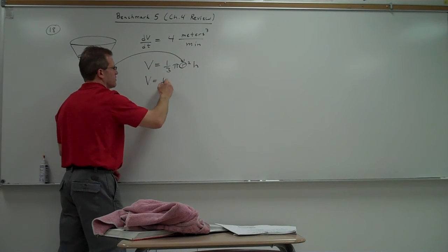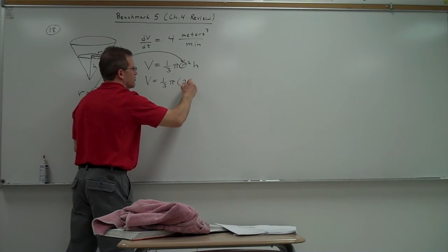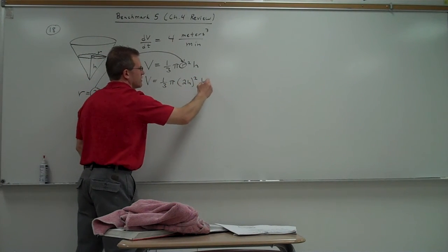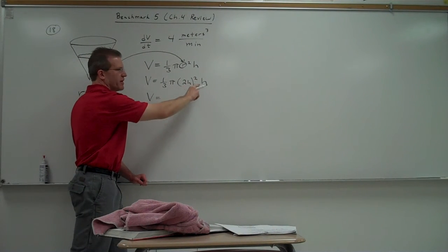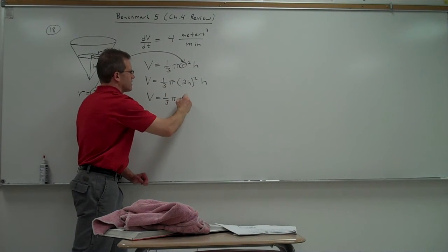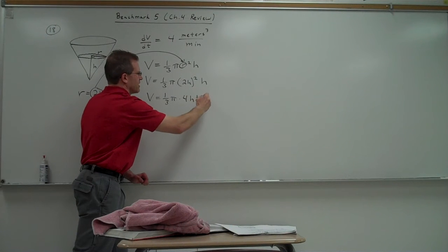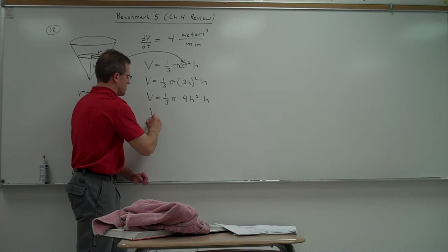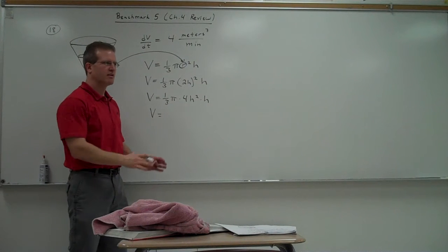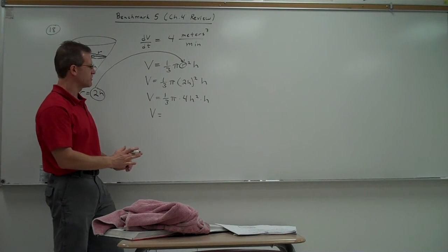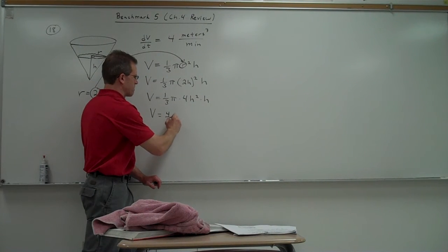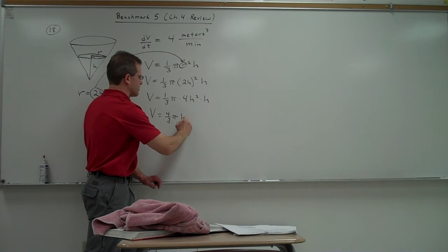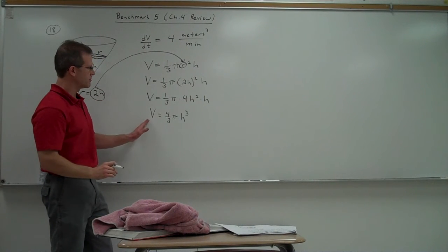So volume equals 1 third pi. Instead of r, you're going to have 2h quantity squared times h. Then you're going to square everything in there. So you're going to get 2h times 2h, or square the 2, square the h. And you're going to get 1 third pi times 4h squared times h. Keep simplifying. Don't do the derivative too early. Get it simplified as much as you can before you find the derivative. 4 times 1 third is 4 thirds pi. h squared times h is h to the third.